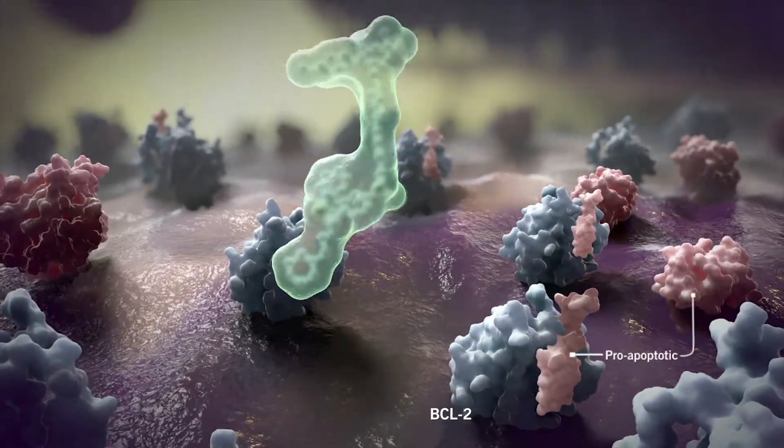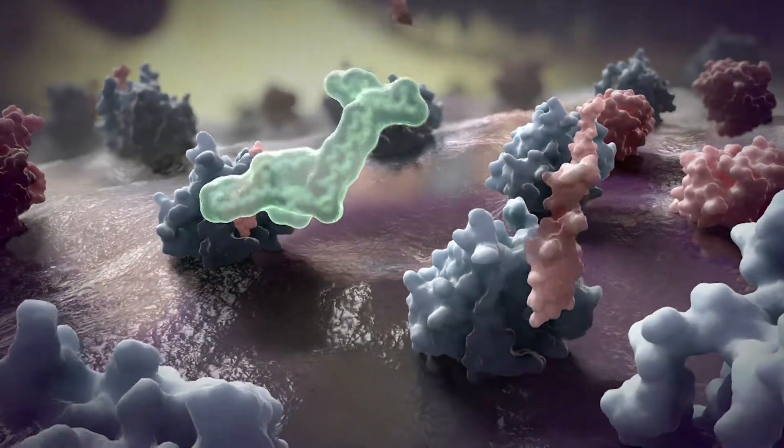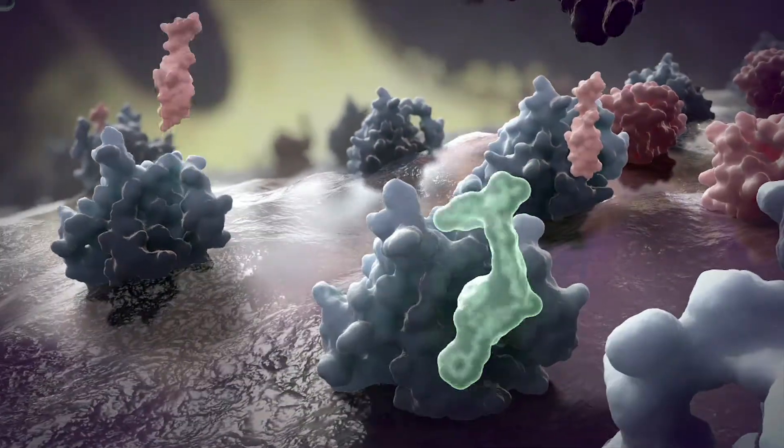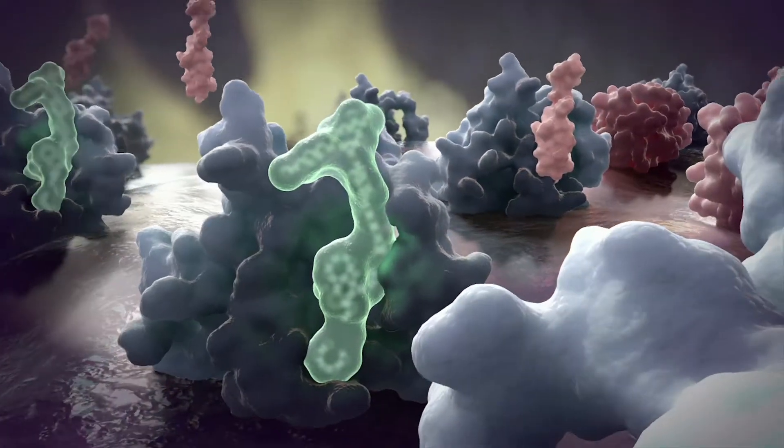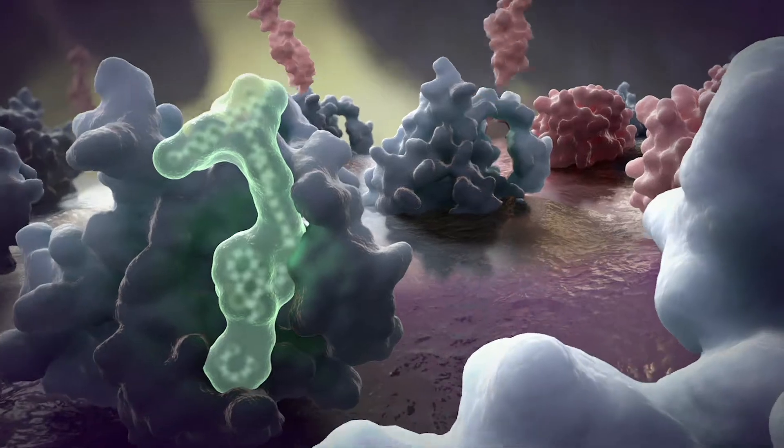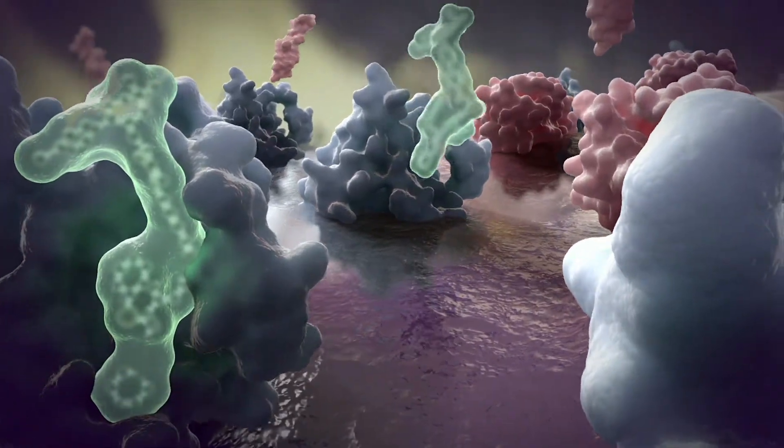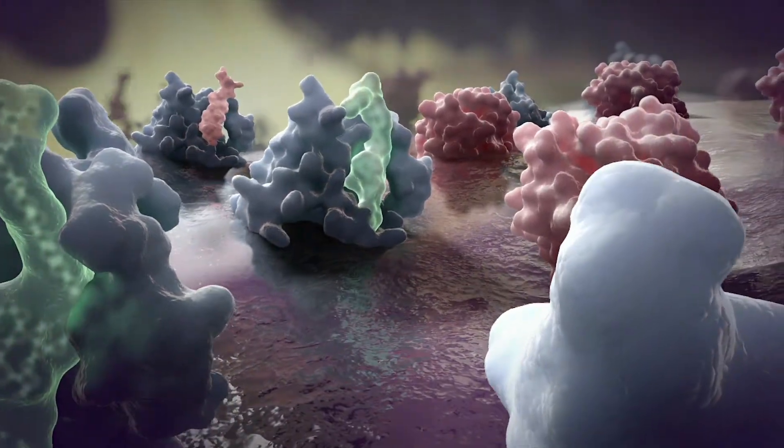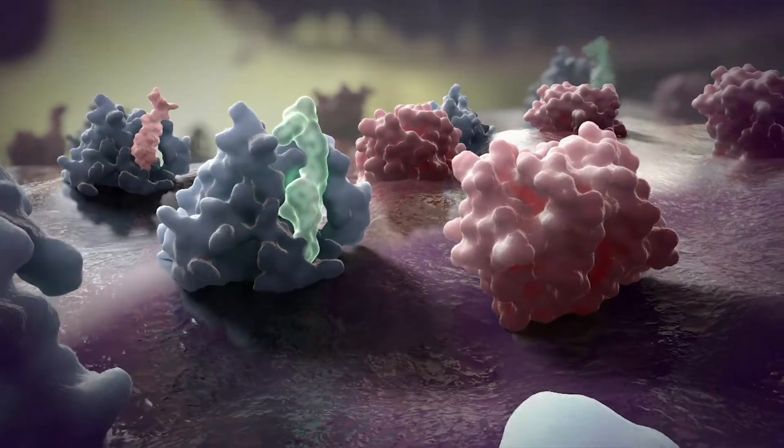Upon binding BCL2, 199 can displace the store of pro-apoptotic proteins in malignant cells. This causes a shift in the dynamic balance between the available BCL2 and pro-apoptotic family members, inducing apoptosis.